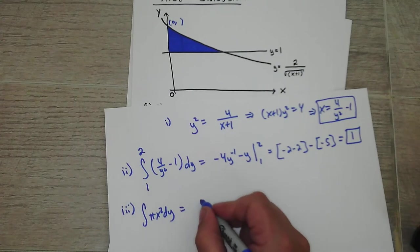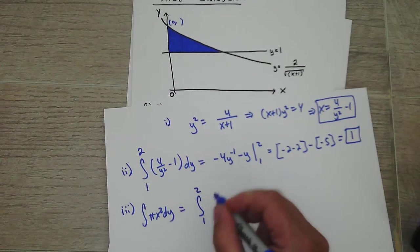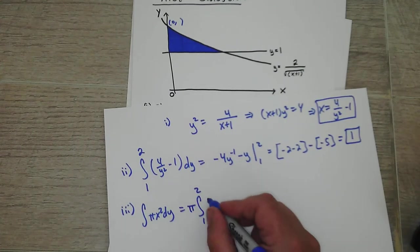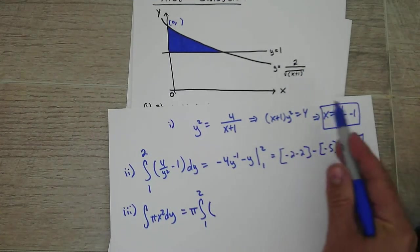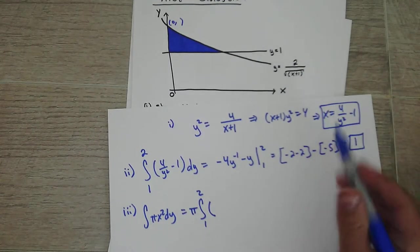So it's integration from 1 to 2. Bring the pi out here. x squared. So that means I have to square this. Okay?